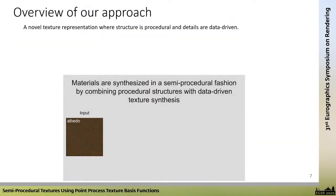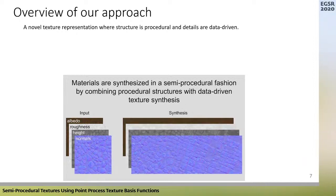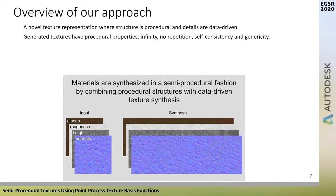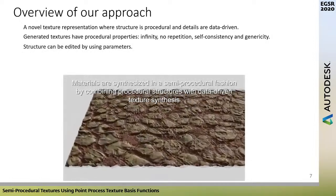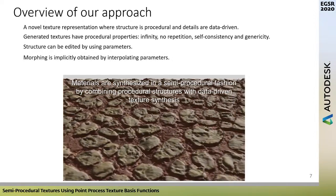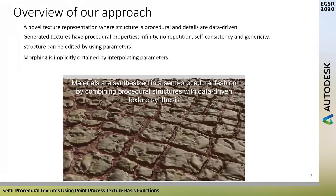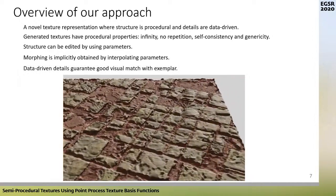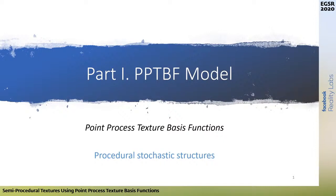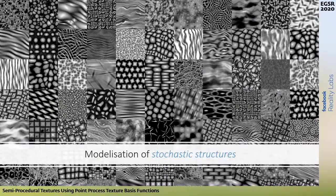We propose a novel texture representation where structure is procedural and details are data-driven. Generated textures have procedural properties: infinity, no repetition, self-consistency, and genericity. The structure can be edited using parameters; morphing is implicitly obtained by interpreting these parameters, and the data-driven details guarantee a good visual match with the exemplar. In this first part, we explain our PPTBF model, which stands for Point Process Texture Basis Functions, and deals with the modelling of stochastic structures.